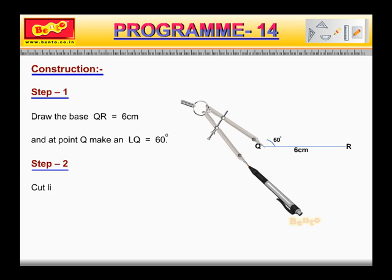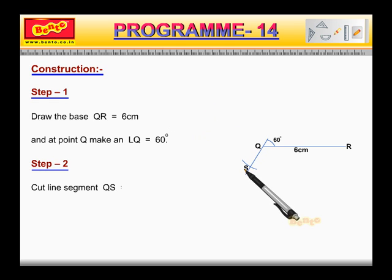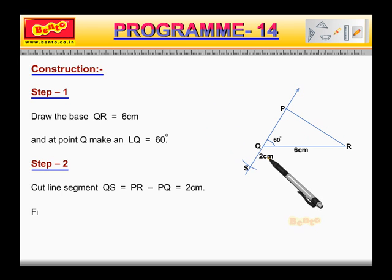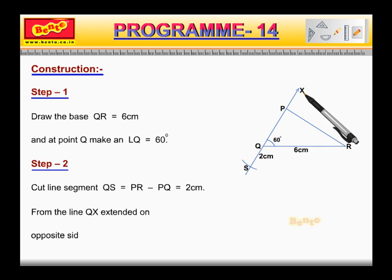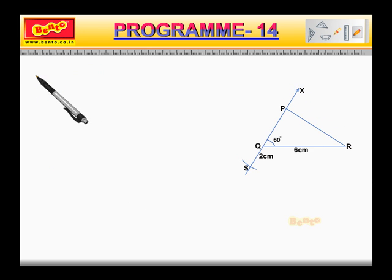Step 2. Cut line segment QS is equal to PR minus PQ, which is equal to 2 cm, from the line QX extended on opposite side of line segment QR. Now step 3.